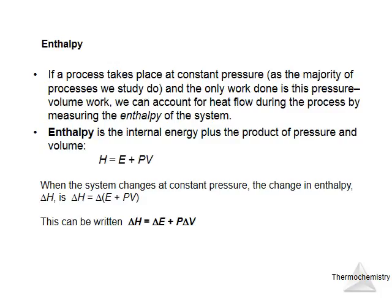Enthalpy, or energy content, is given by the sum of internal energy plus pressure times volume. We can better understand enthalpy when we look at the change in enthalpy. From calculus, change in enthalpy would be given by change in internal energy plus P times delta V when the pressure is constant, which is the case in most experiments done under one atmospheric pressure. So in most experiments, we can write delta H as delta E plus P delta V.